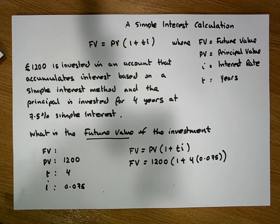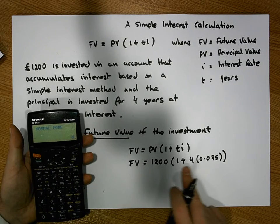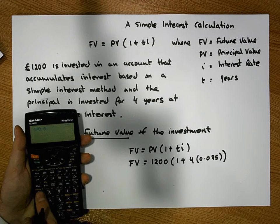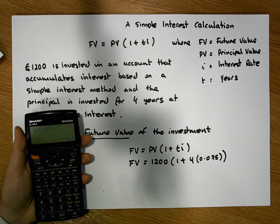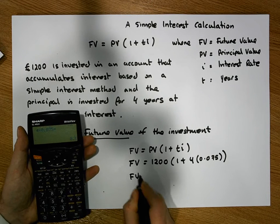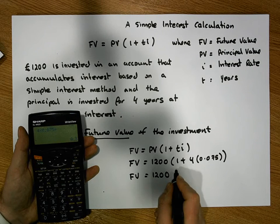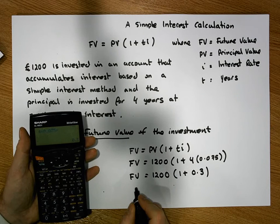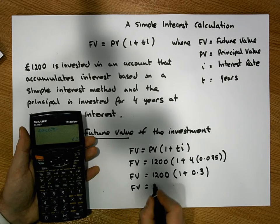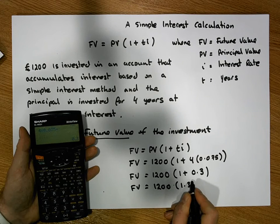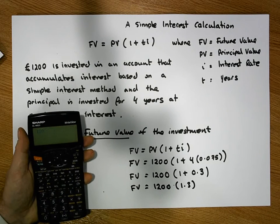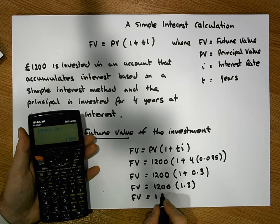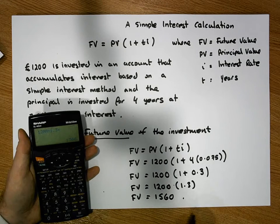Let's work inside the brackets first: four times 0.075 gives us a value of 0.3. So this becomes: future value equals 1,200 times one plus 0.3. One plus 0.3 is 1.3, so our future value is 1,200 times 1.3. That gives us a future value of 1,560 euros.